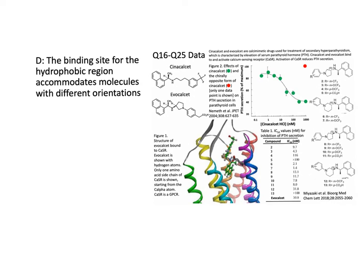So by process of elimination this has to be the answer, but let's go through why it's correct. The answer states that the binding site for the hydrophobic region accommodates molecules with different orientations. This makes sense because if you have different positions added to the aromatic ring, like meta and para groups, they would also have low IC50s. Compound 7 has a meta group and an IC50 value of 1.4 nanomolar. And then compound 10 has a comparable IC50 value of 7.8 — recall what I said earlier about needing to be over 10 times to be notably different — and compound 10 has a para group. So this binding site is pretty accommodating and this is the best answer choice.